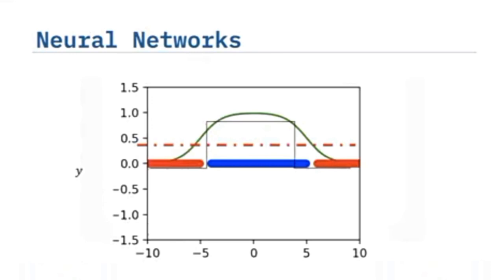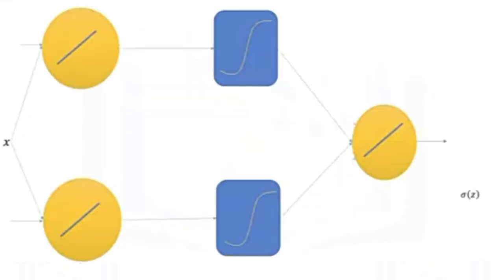We obtain the parameters via gradient descent. We can use the graph to represent the process. We apply two linear functions to x and we get two outputs. To each linear function we apply a sigmoid. We then apply a second linear function to the outputs of the sigmoid.